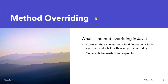When do we use overriding in Java? If we want the same method with different behaviour in superclass and subclass, then we go for overriding. When we call an overridden method with a subclass reference, the subclass method is called, hiding the superclass method.